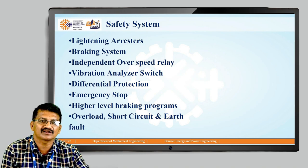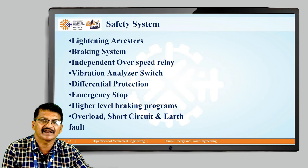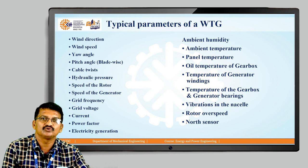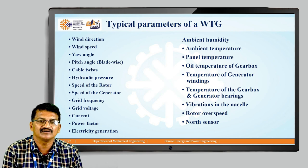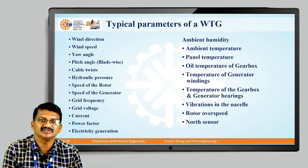The safety systems included in any wind turbine are: lightning arrestor, braking system, independent overspeed relay, vibration analyzers, analyzer switch, differential protection, emergency stop, higher-level braking programs, overload protection, short circuit protection, and earth fault protection. All these parameters should be properly measured and checked in the wind turbine generator.